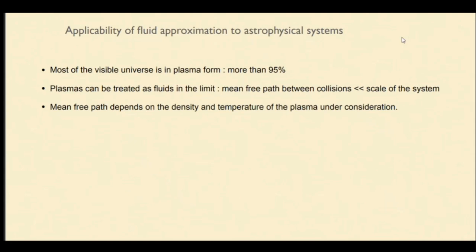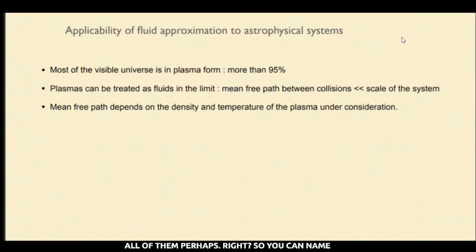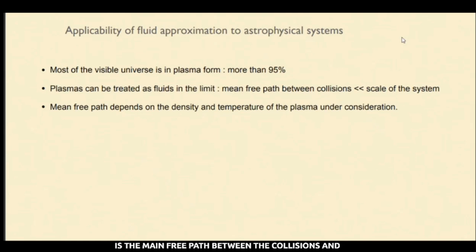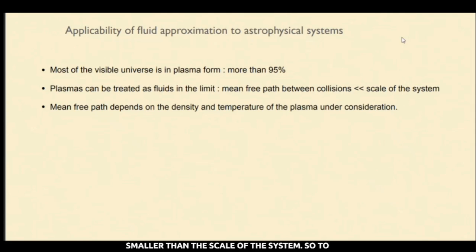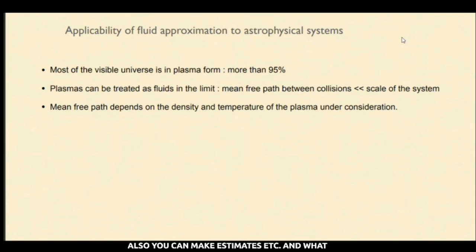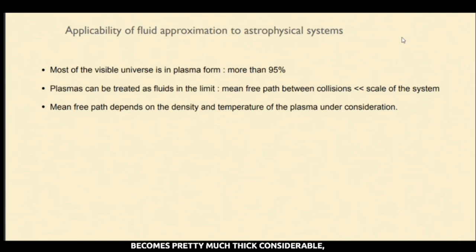What plasma scenarios can be studied in MHD? Obviously not all of them. You can name your favorite astrophysical system — maybe the sun or a galaxy — and we should be able to ask: what is the mean free path between the collisions? Does it look to be much smaller than the scale of the system? To compute that, you need to know the density and temperature, which you can get from observations. If you have very small density or very high temperatures, then the mean free path becomes comparable to the size of the system, and then you can't use the fluid approximation.